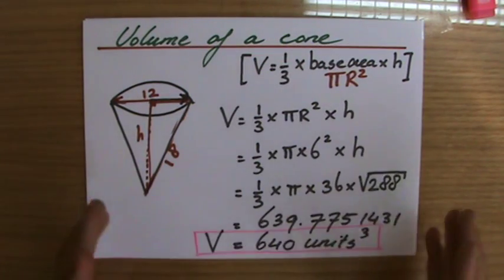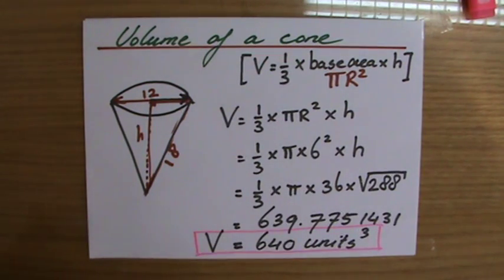Square root of 288, so I plug that into the equation, into the formula: 640 units to the power three for the volume of this cone. Let's have a look at some compound figures and how we calculate the volume and surface area of those. See you then.